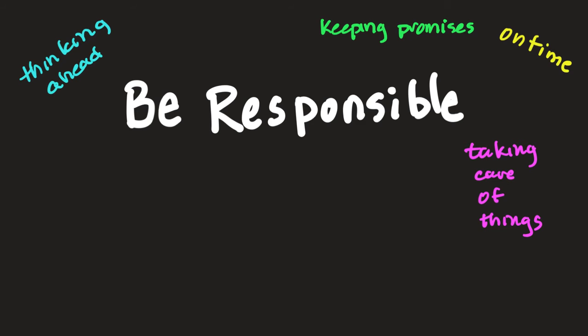Today, we're going to take a minute during assembly to talk about that. Students, can you pause the video and go ahead and circle up. Being responsible can mean so many different things. It can mean being on time or thinking ahead, taking care of things, or keeping your promises. Then there's doing your job or being healthful.